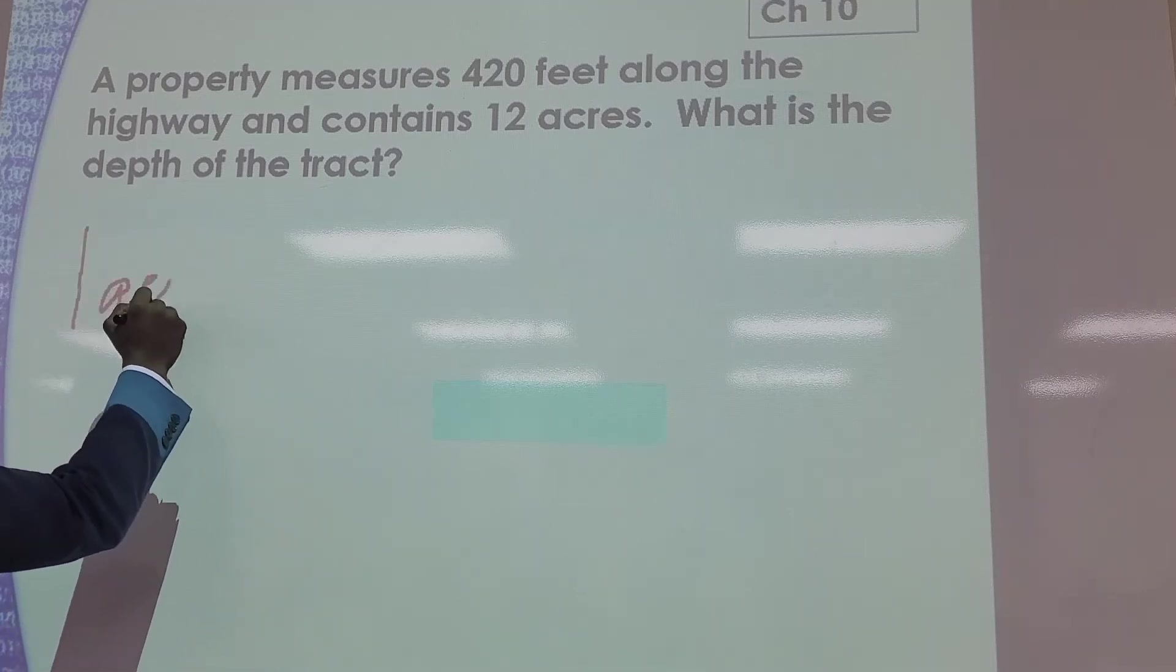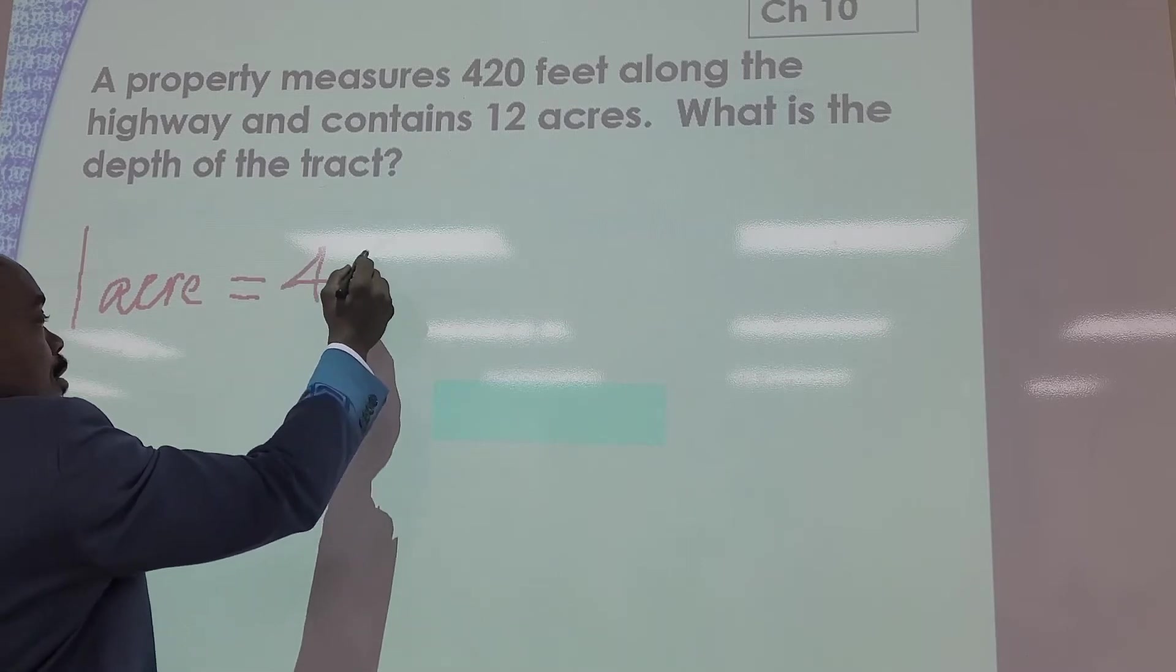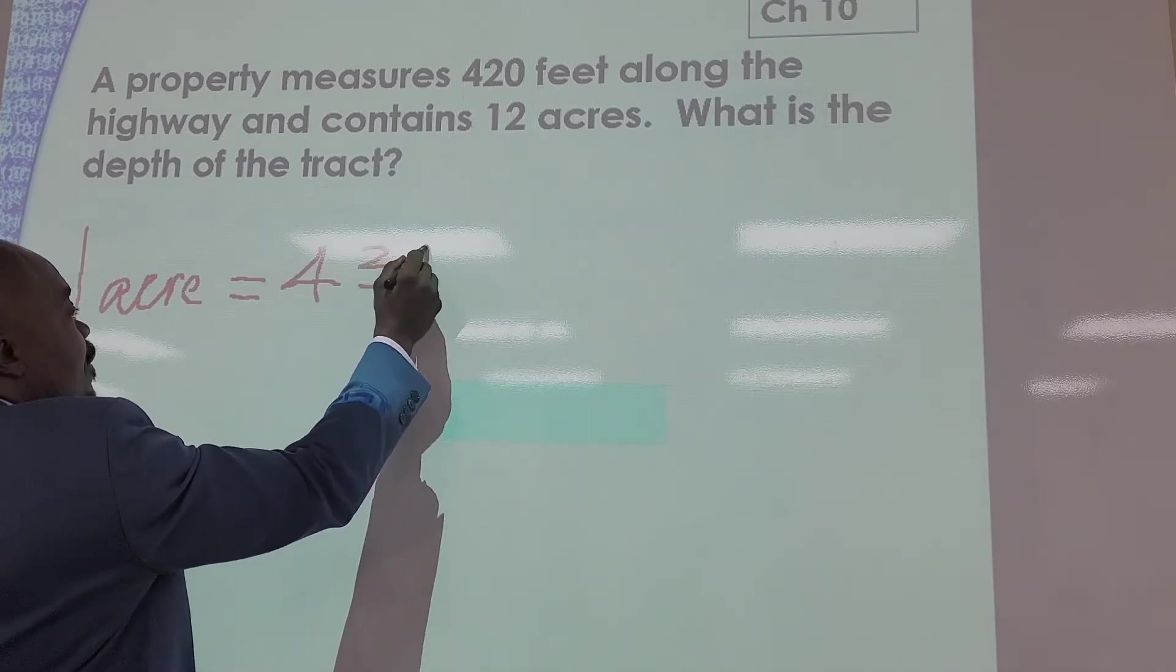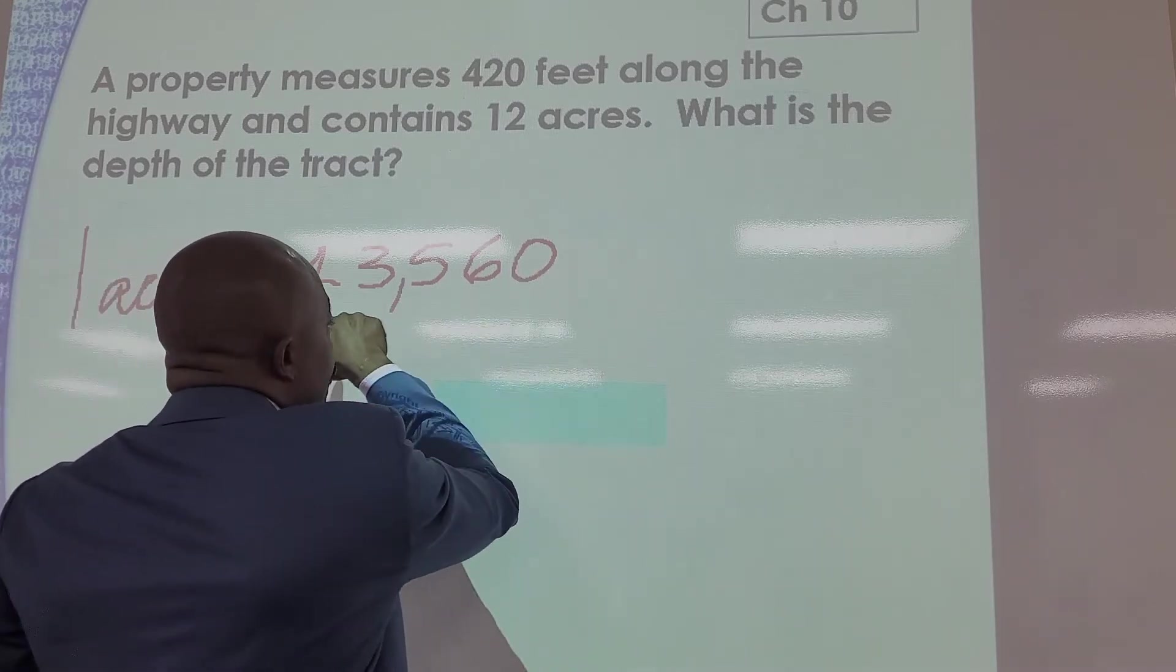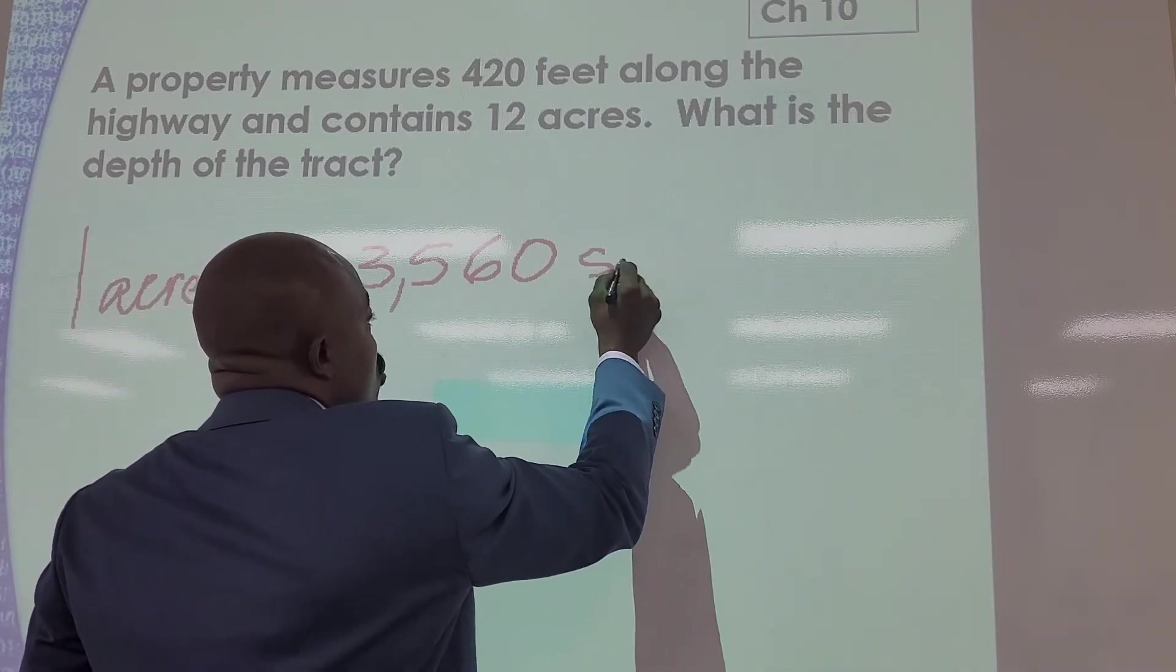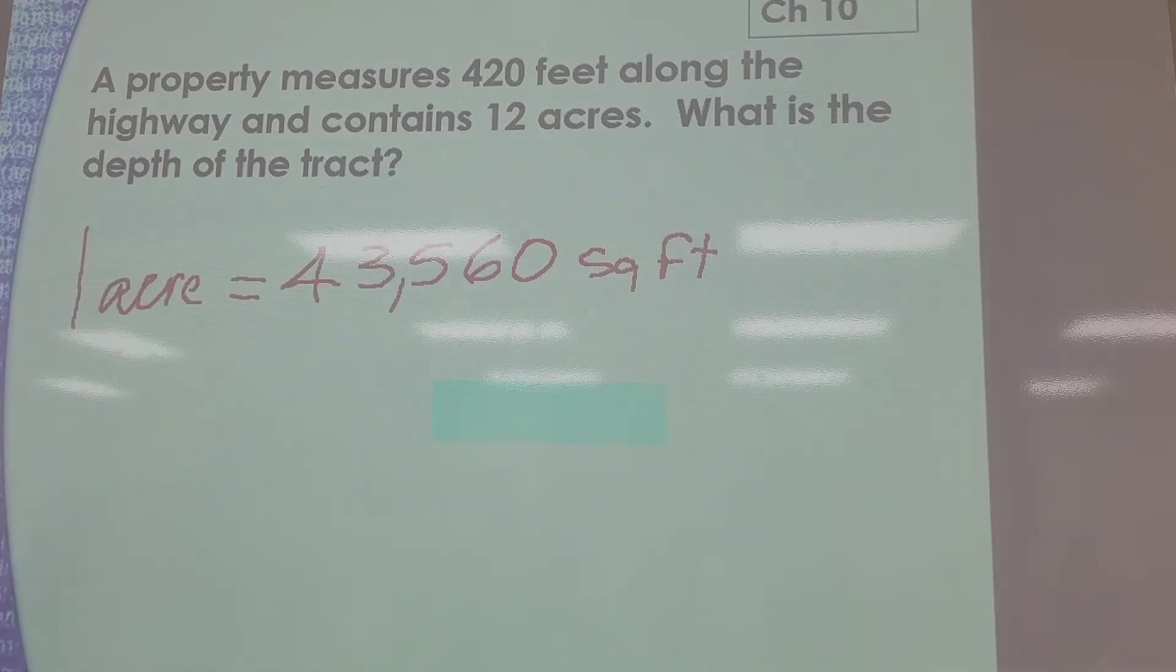One acre equals 43,560 square feet. The question asked: A property measures 420 feet along the highway. It contains 12 acres. What is the depth of the tract?